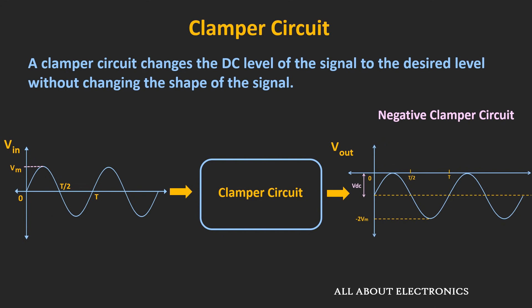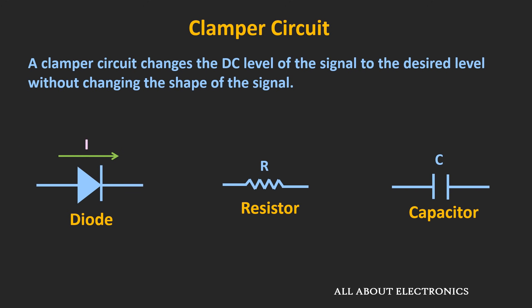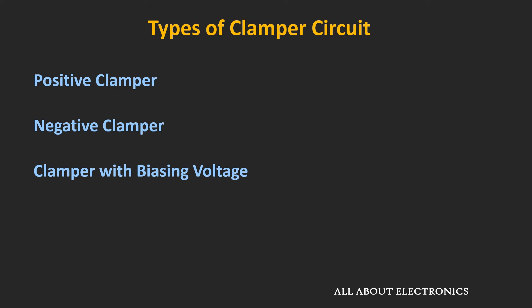This clamper circuit can be designed using the diode, resistor, and the capacitor. And many times, to shift the DC level to the desired voltage, the reference level or the biasing voltage is also added with this clamper circuit. So this clamper circuit can be classified broadly in three categories: the positive clamper circuit, the negative clamper circuit, and the clamper circuit with the biasing voltage. In this video, one by one we will see all three types of clamper circuit.